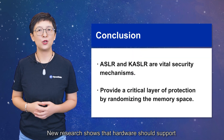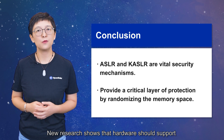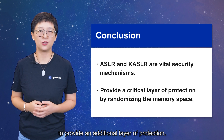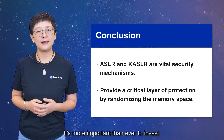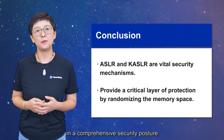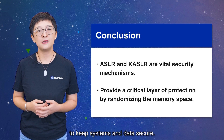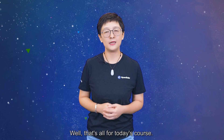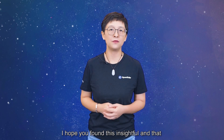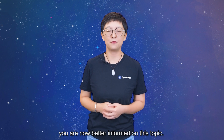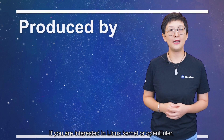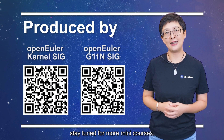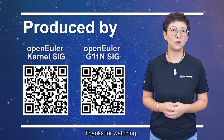New research shows that hardware should support randomized address spaces to provide an additional layer of protection. It's more important than ever to invest in a comprehensive security posture to keep systems and data secure. That's all for today's course. I hope you found this insightful and that you are now better informed on this topic. If you are interested in OpenEuler or OpenOILA, please visit our page and stay tuned for more mini-courses. Thanks for watching.